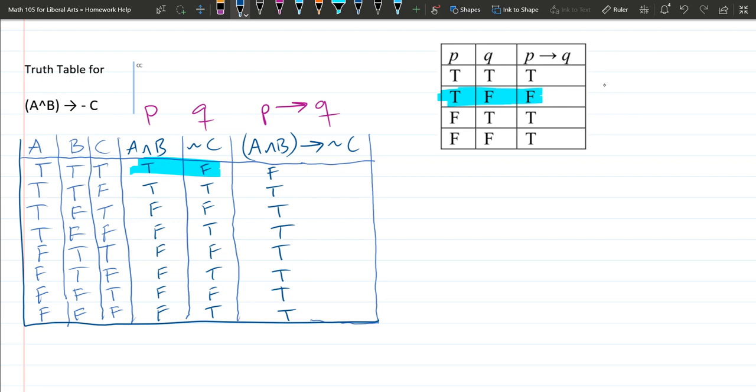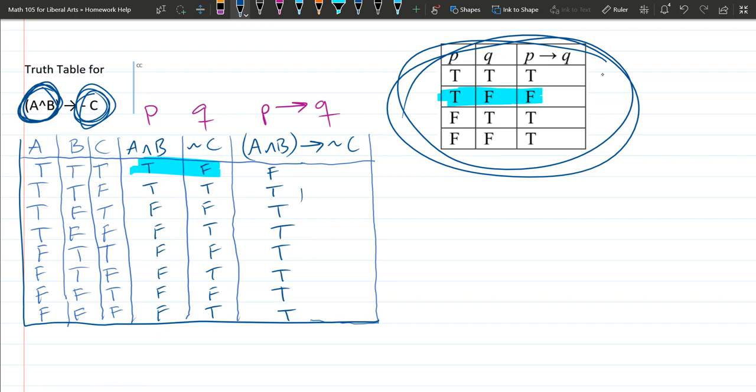All right, so that is how you do more complicated implications. You first figure out the truth table for what comes before the arrow, then the truth table for what comes afterwards. And once you have that, you use the implication truth table to figure out if the implication is true or false.